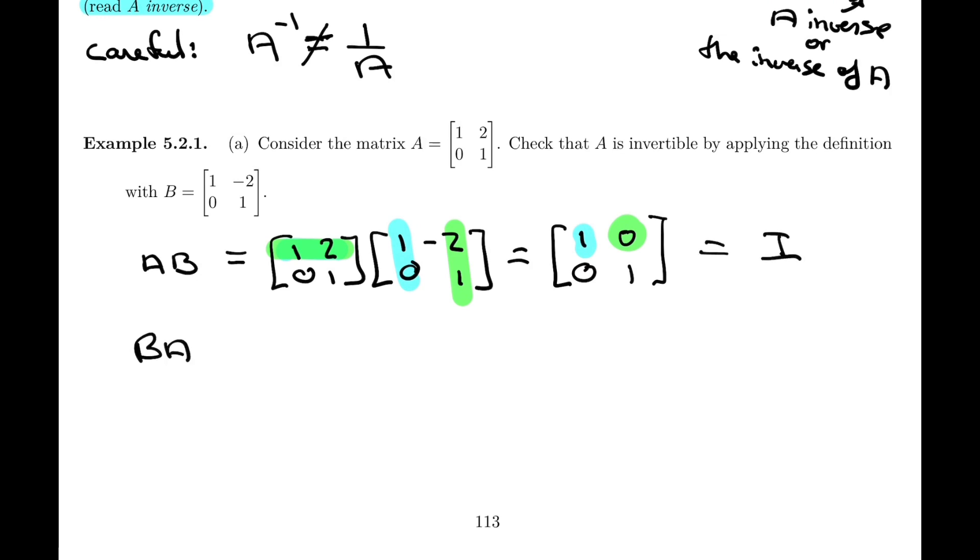And of course, the same thing will be true on the other side. B times A, [1, -2, 0, 1] times [1, 2, 0, 1]. And if we carry out the matrix multiplication the same way, we'll have [1, 0, 0, 1], which is the identity matrix. And therefore, we have that both AB and BA are equal to I. And that's what we wanted to check.